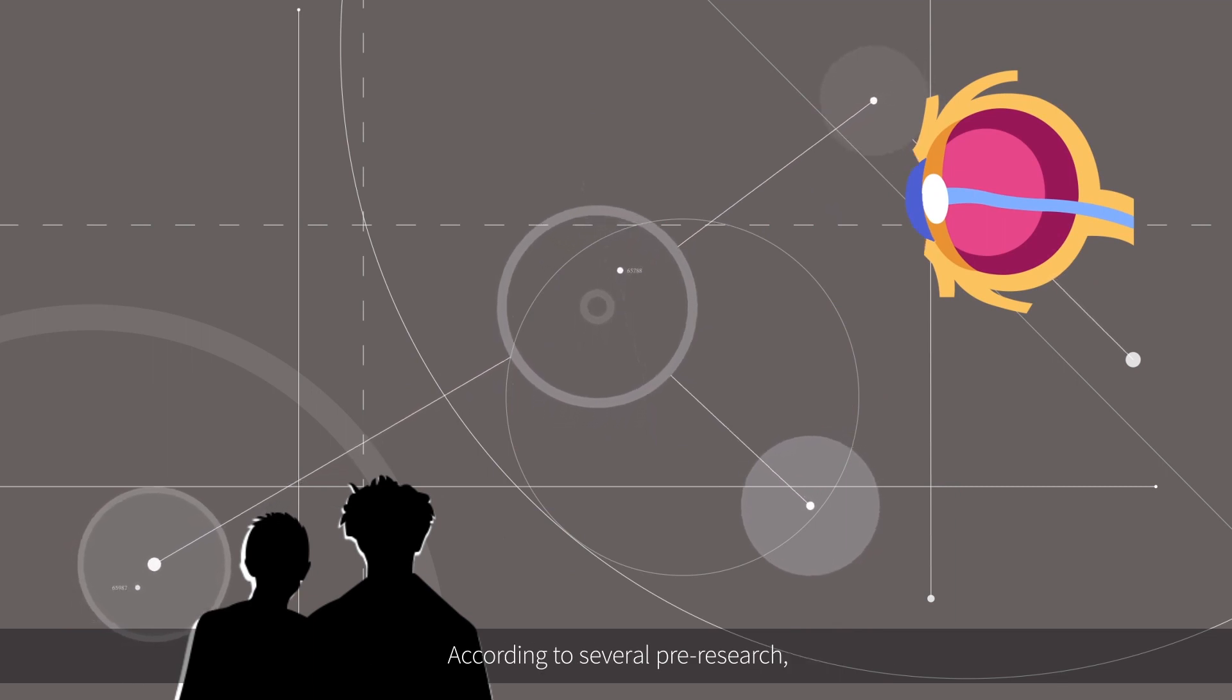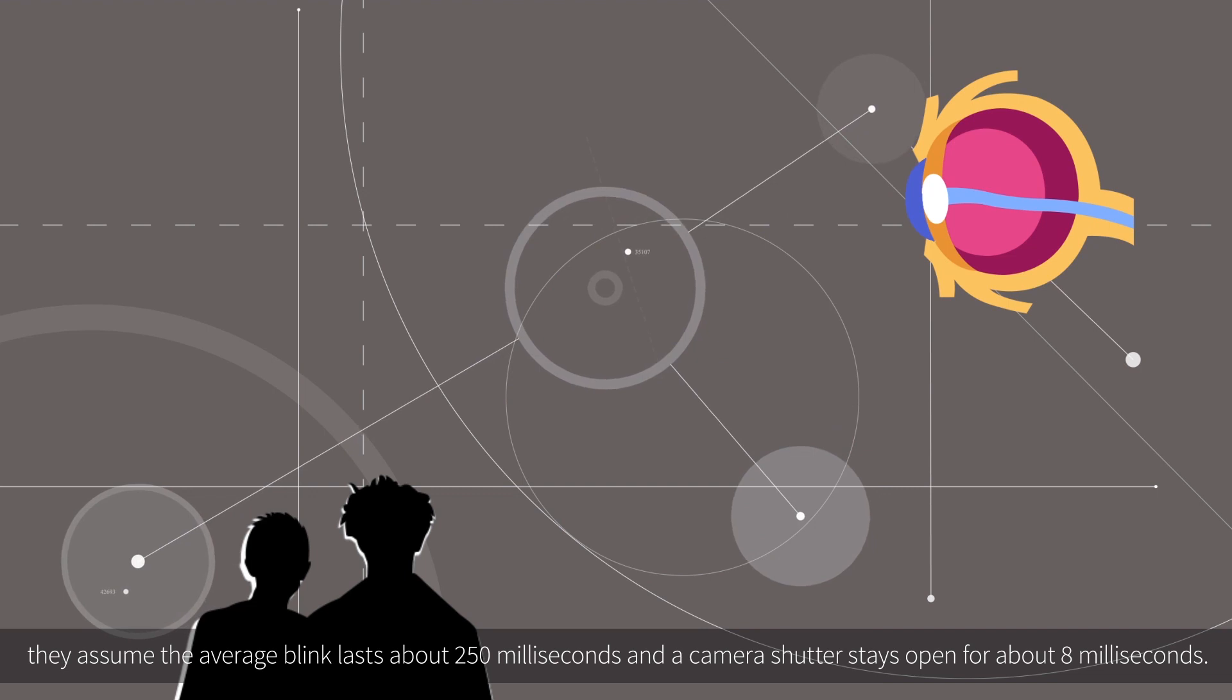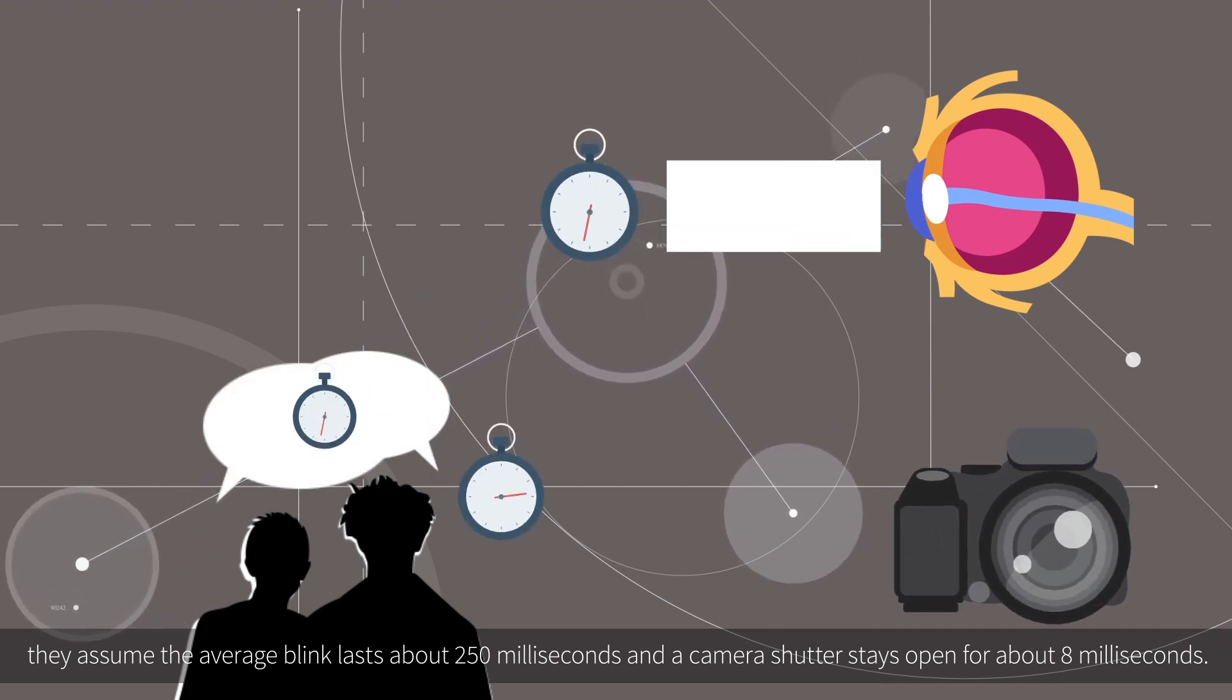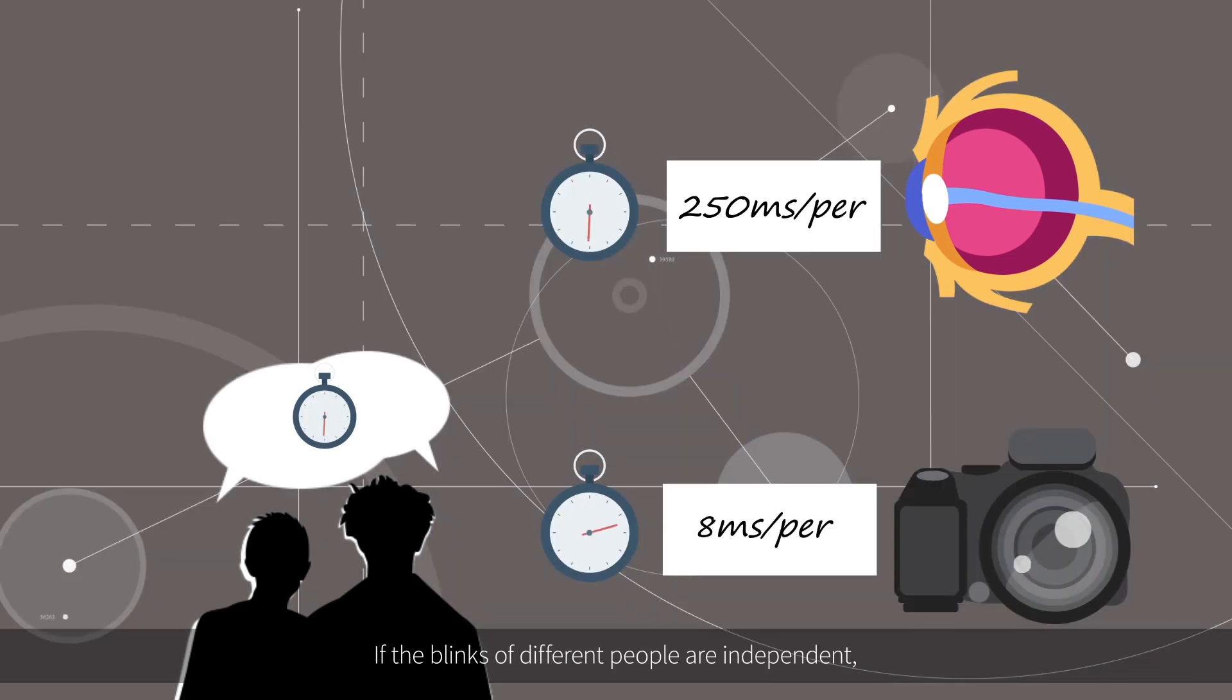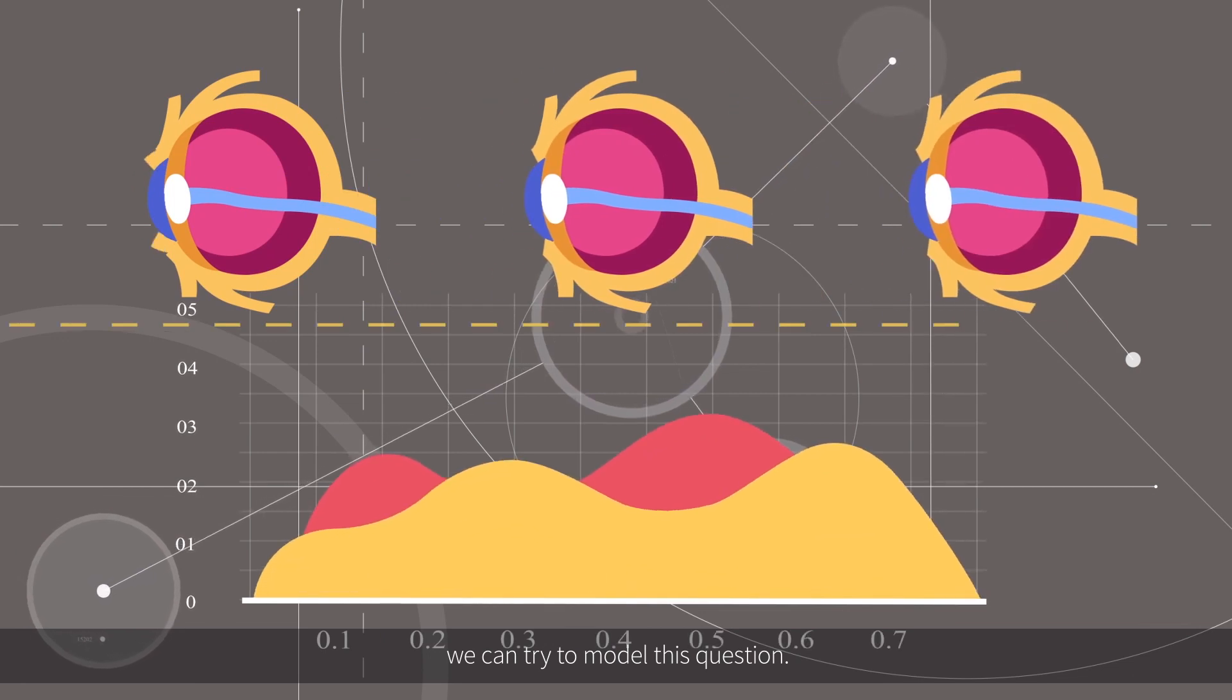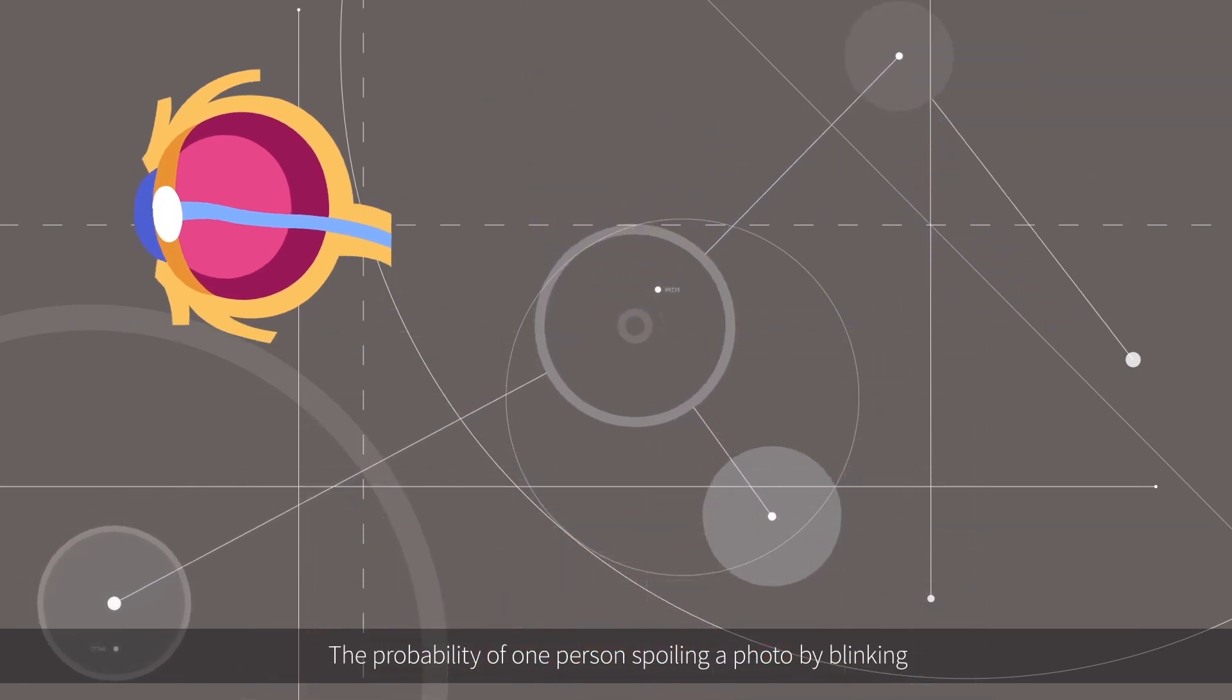According to several pre-research studies, they assume the average blink lasts about 250 milliseconds and a camera shutter stays open for about 8 milliseconds. If the blinks of different people are independent, we can try to model this question.